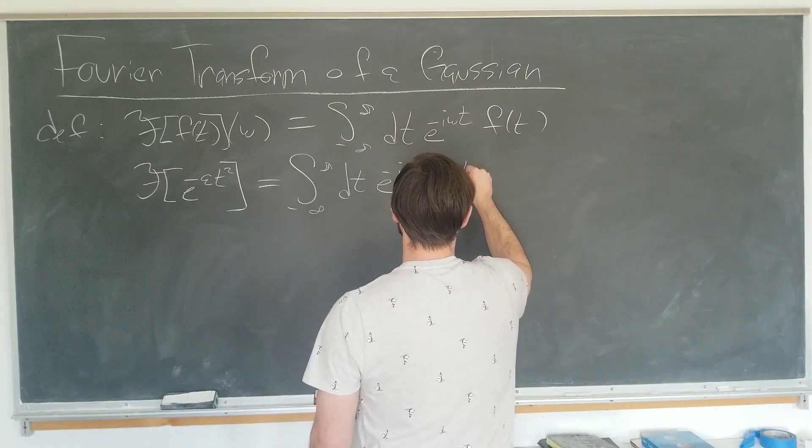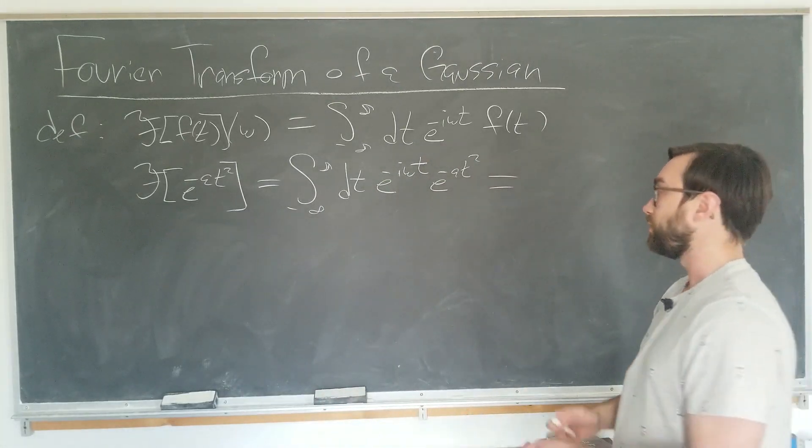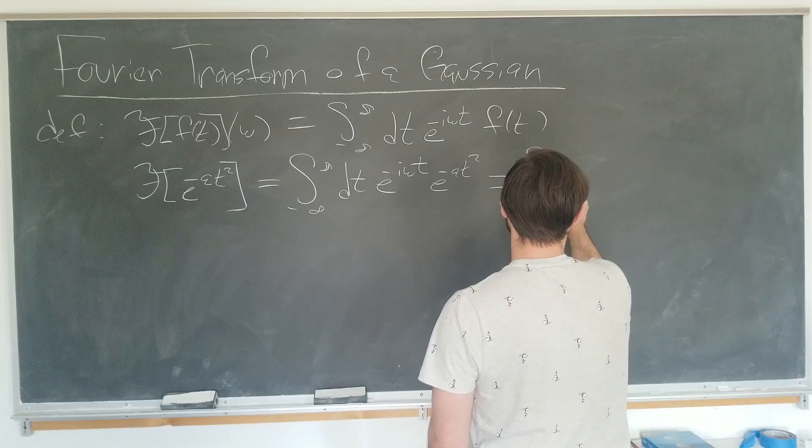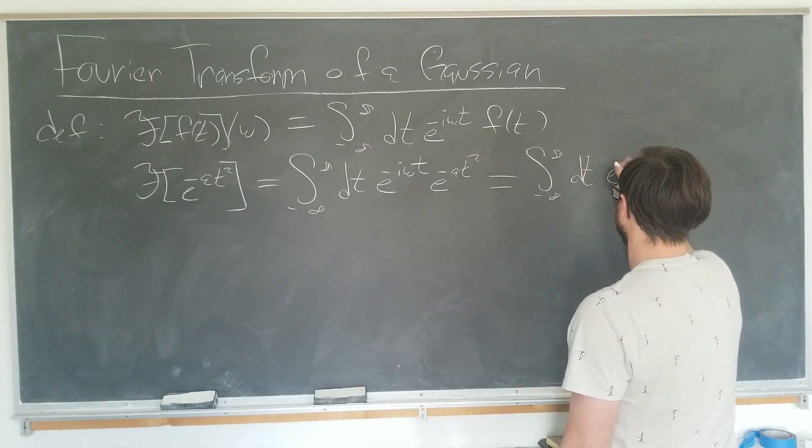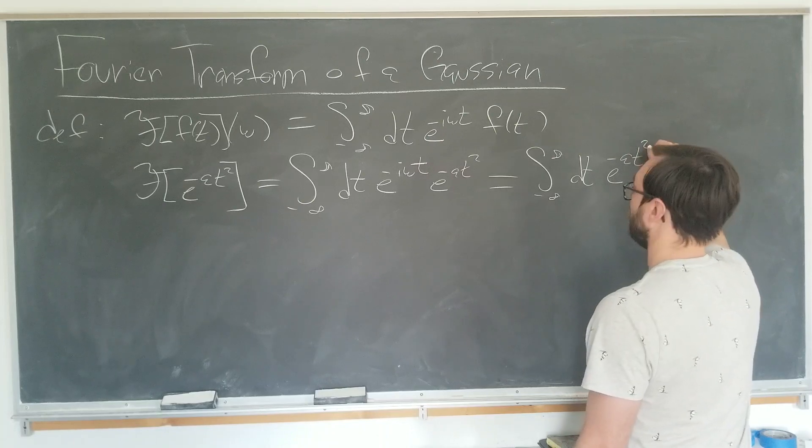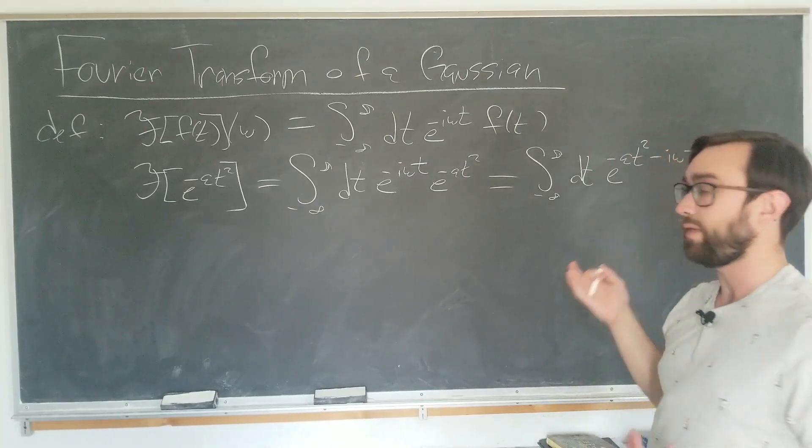Which we can write as one exponential, of course, integral over all time of e to the minus a t squared minus i omega t. Now, apart from the i factor,